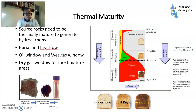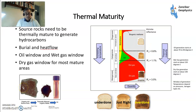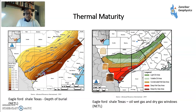They need to be thermally mature to generate hydrocarbons — so you've got burial and heat flow. You have to be in the oil window to get oil, and in the gas window to get gas. If you're undercooked, like undercooked toast, it ain't going to happen. Overdone, it isn't going to work either. You're looking at about 90–150°C of temperature for the oil window. Looking at an example from Eagleford in Texas: shallow near the outcrop around San Antonio, getting deeper, and as depth increases you transition from volatile oils to condensate/wet gas to deep dry gas — immature, just right, a bit overdone.